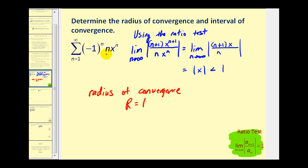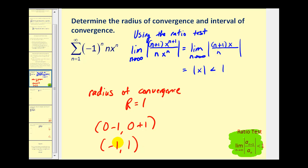Since this power series is centered at x equals zero, the open interval of convergence will be from zero minus one to zero plus one, which means it converges on the open interval from negative one to positive one. To determine the true interval of convergence, we must test whether the series converges or diverges at the endpoints negative one and positive one by substituting each value.